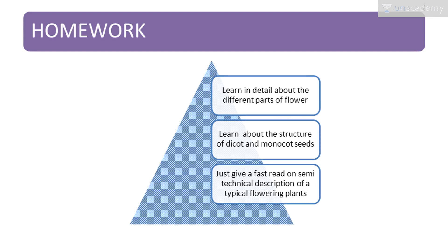The homework for this chapter is to learn in detail about the different parts of the flower — it's very important. Also learn about the structure of dicot and monocot seeds, and give a fast read on the semi-technical description of a typical flowering plant, which is given in the last page of the NCERT textbook in this chapter. Please go through that.